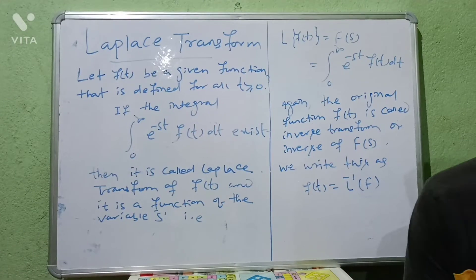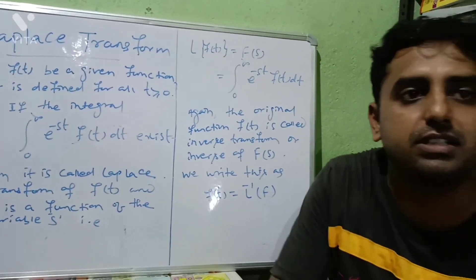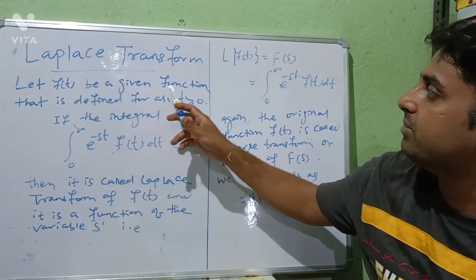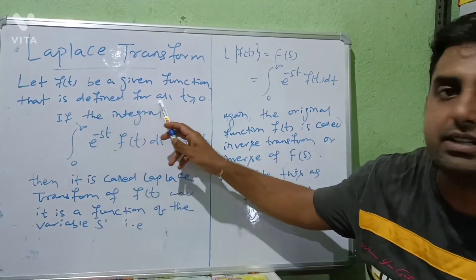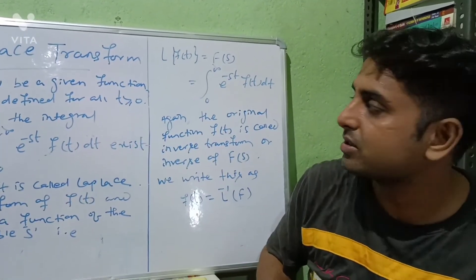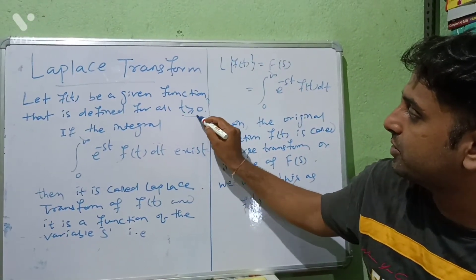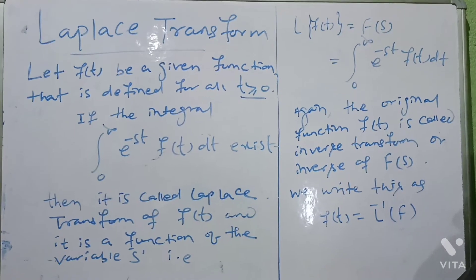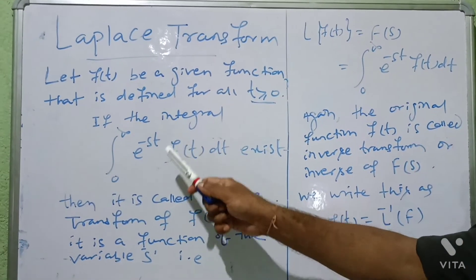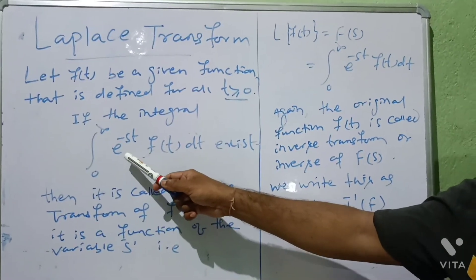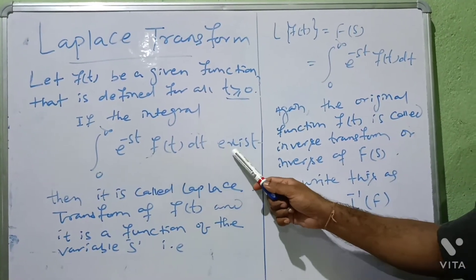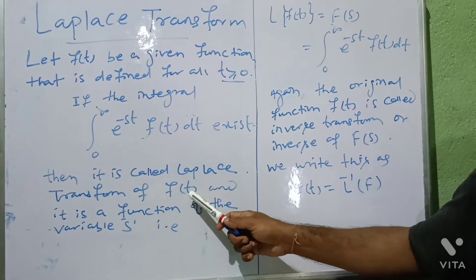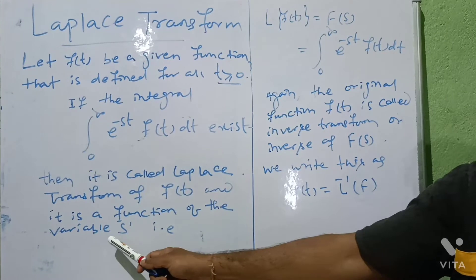First I will discuss the definition of Laplace transform. Let f(t) be a given function that is defined for all t greater than or equal to 0. You must note that t ≥ 0 — it is very important; it may not be less than 0. If the integral from 0 to infinity of e^(−st) f(t) dt exists, then it is called the Laplace transform of f(t), and it is a function of the variable s.